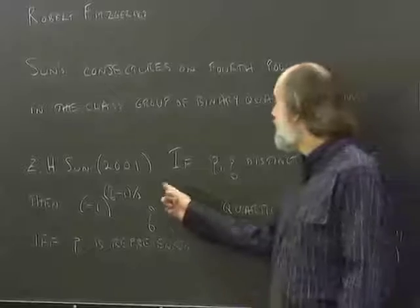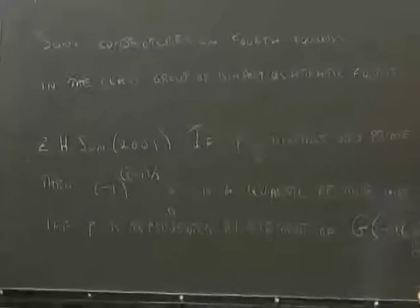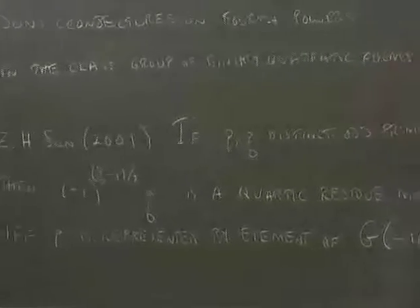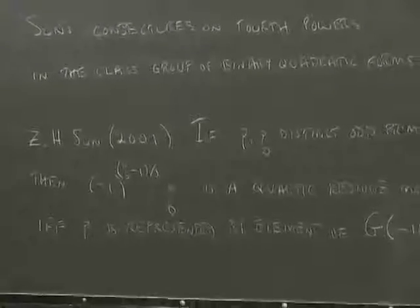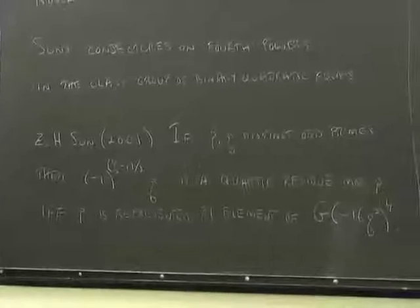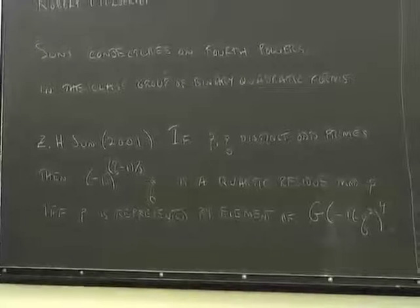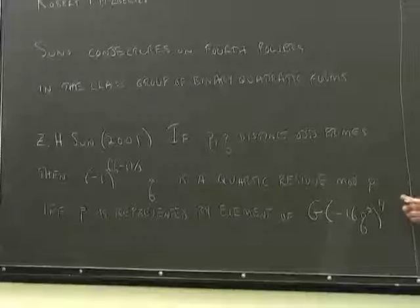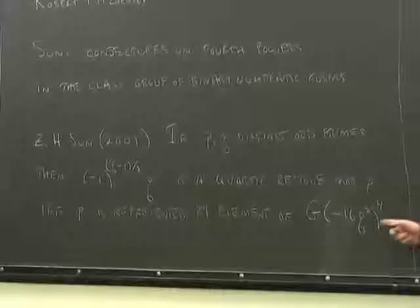In 2001, Sun proved the following theorem. If p and q are distinct odd primes, then minus 1 to the q minus 1 over 2q is a quartic residue mod p if and only if p is represented by an element of the fourth power of the class group.